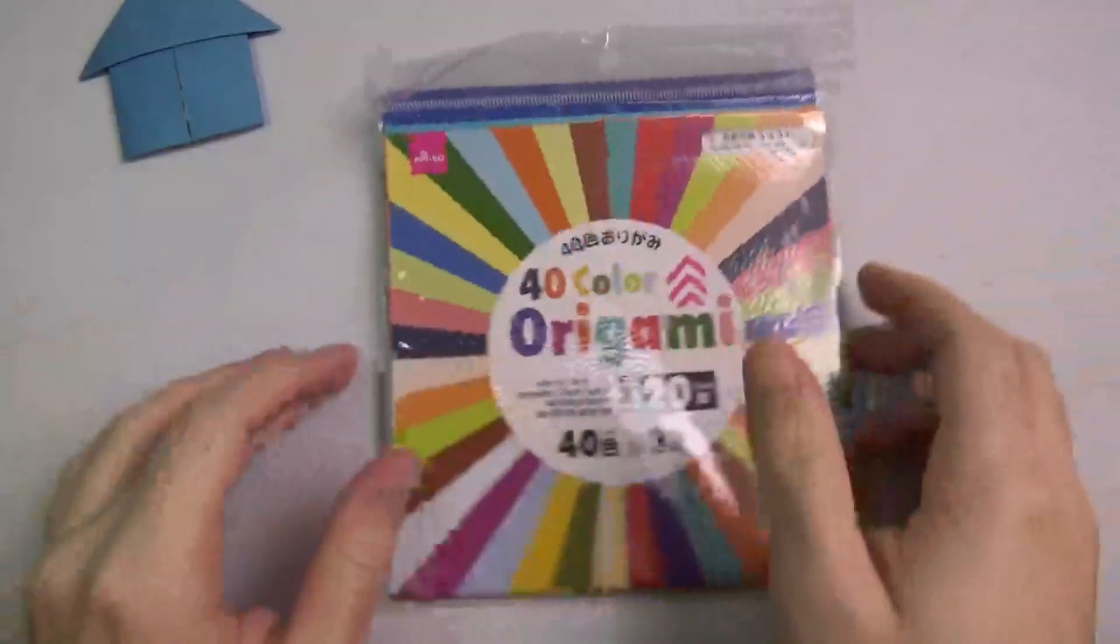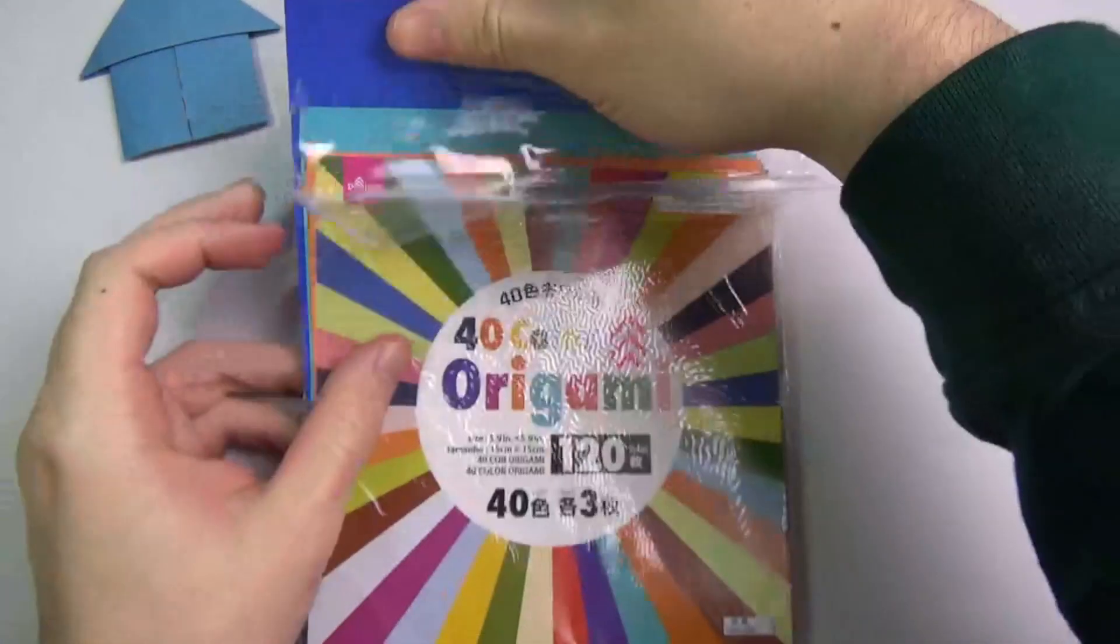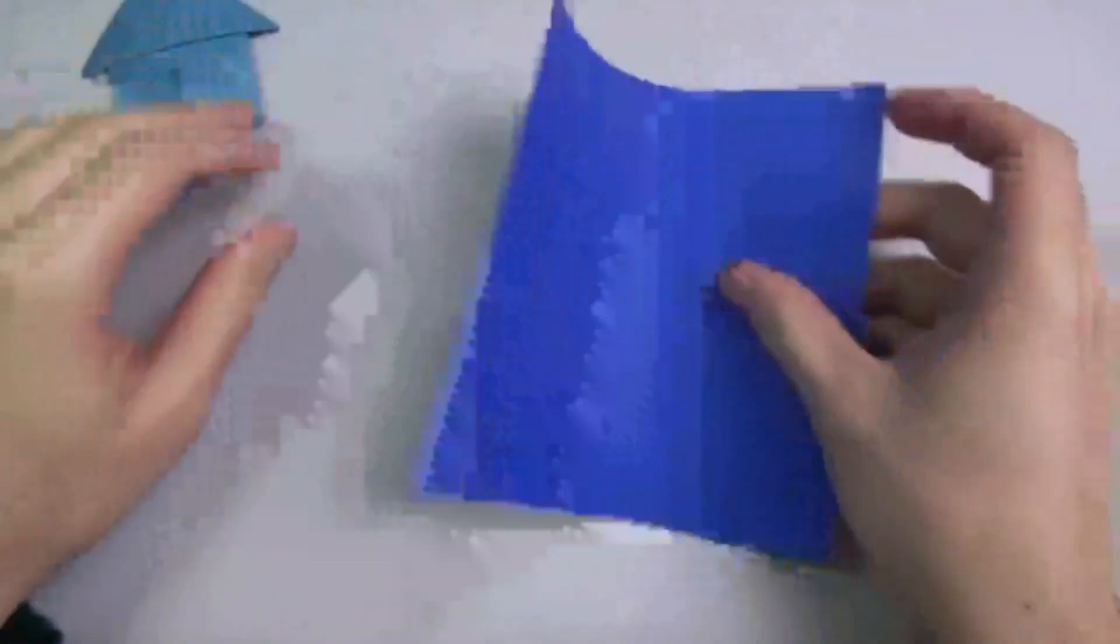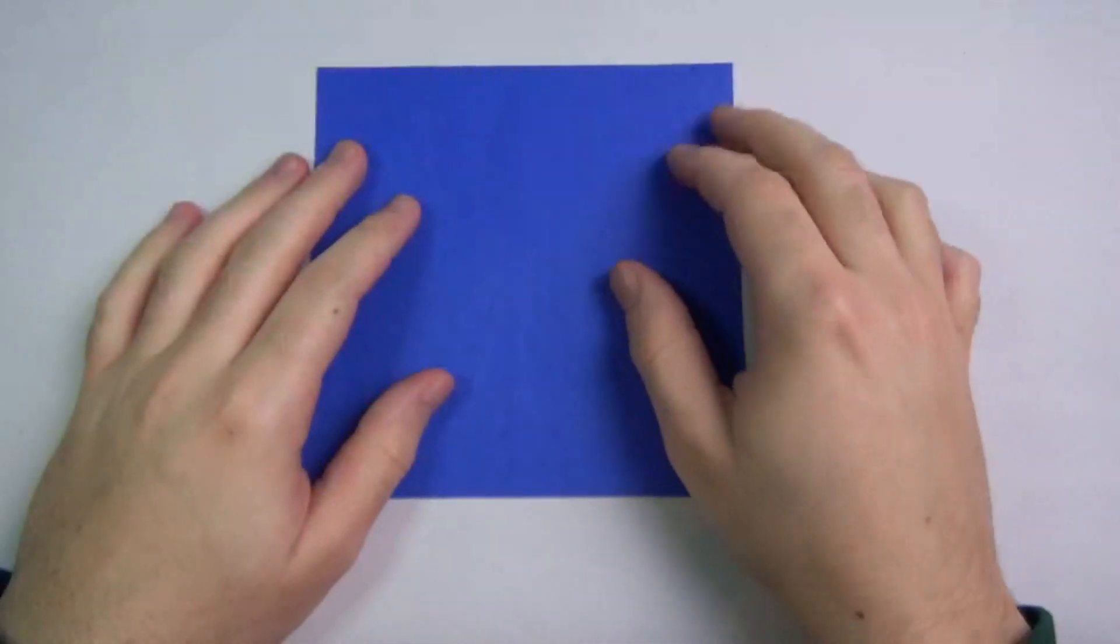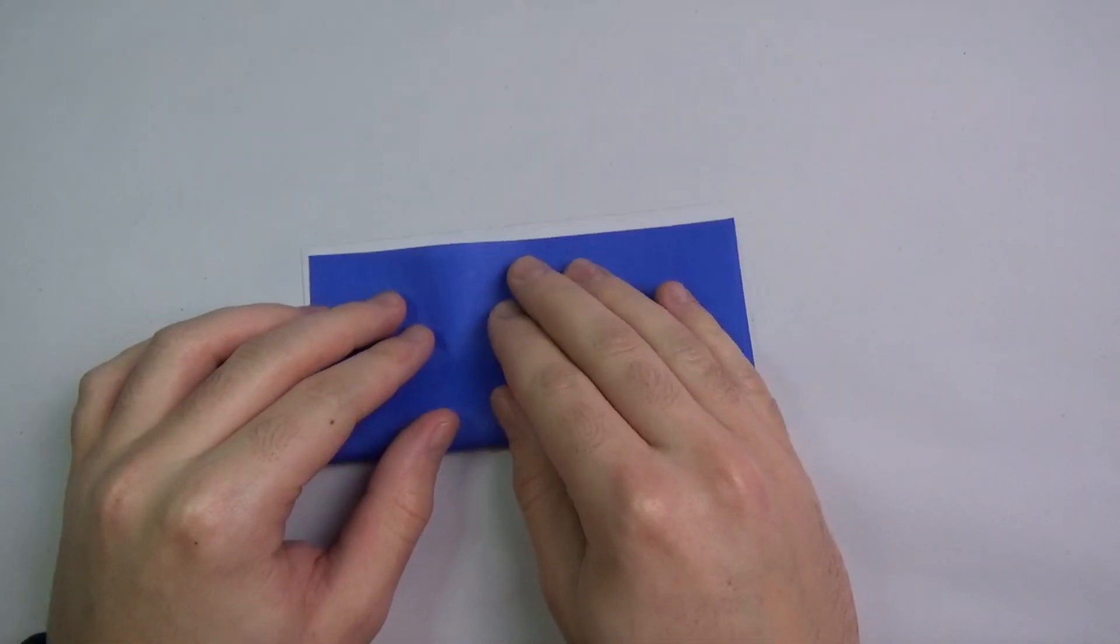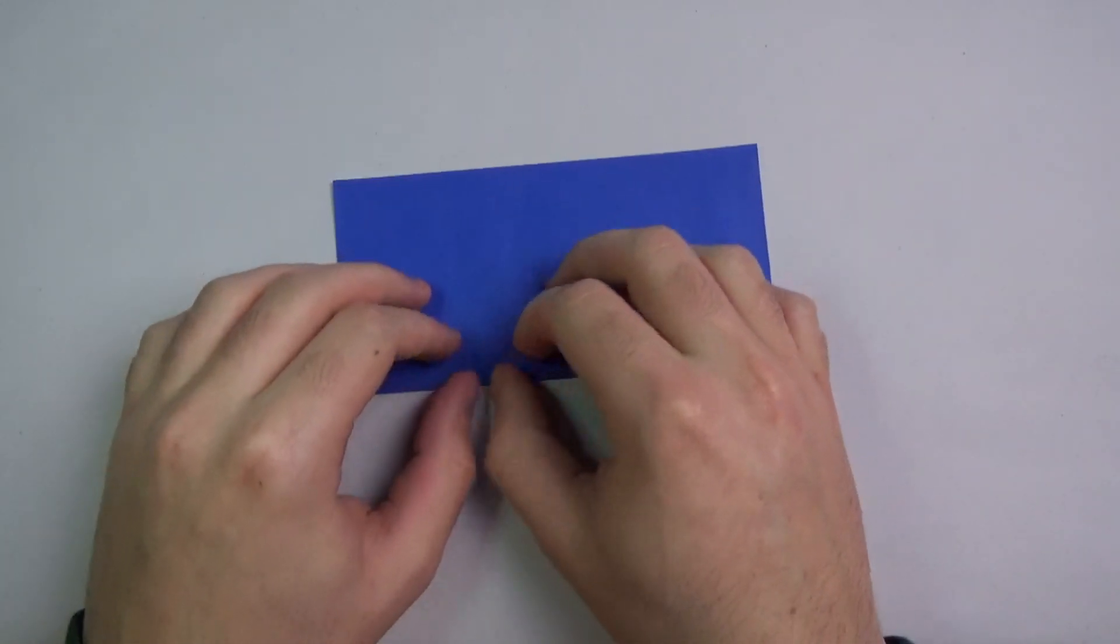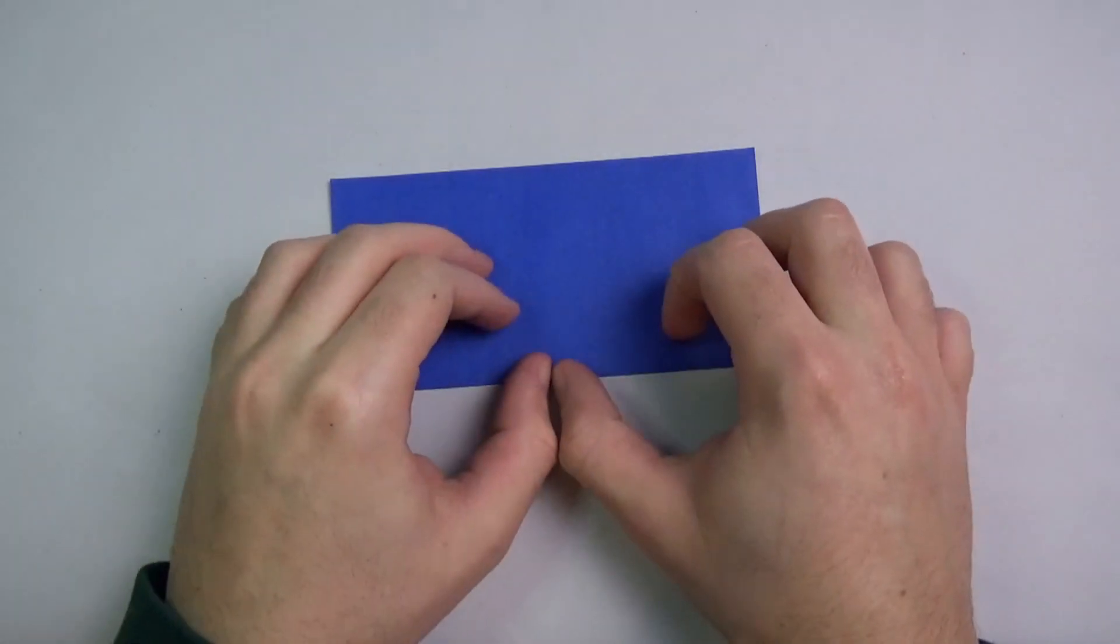Okay, so for this model I'm going to use a 6 inch square. Okay, so for a blue house let's begin white side up and let's fold in half. Try to make very precise folds and crease sharply.